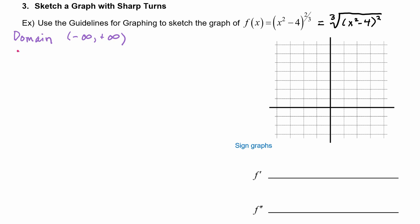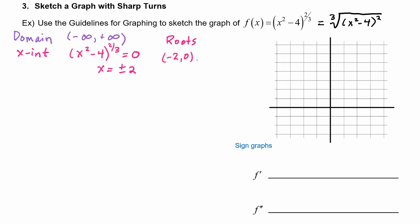Next up, we need to get the intercepts. The x-intercepts are found by solving f(x) = 0, so we take (x² - 4)^(2/3) = 0. The solutions are x = ±2, so our x-intercepts are at (-2, 0) and (2, 0). We can go ahead and plot those on the graph.